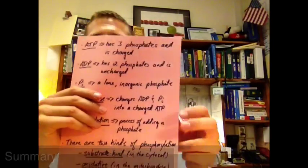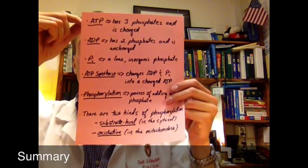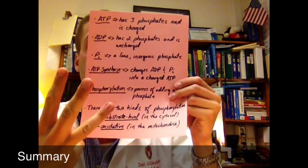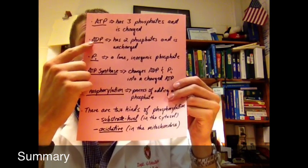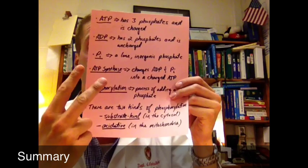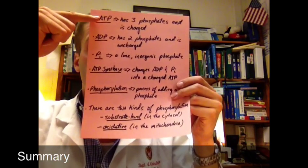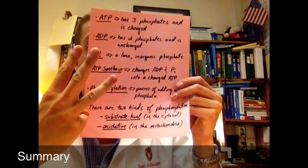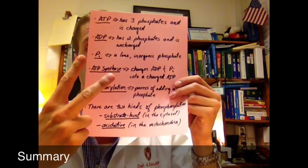Quick summary. We have ATP. That is a molecule with three phosphates and is charged. We have ADP, a molecule with two phosphates and is uncharged. Think of ATP as a triple phosphate. Think of ADP as a double phosphate.